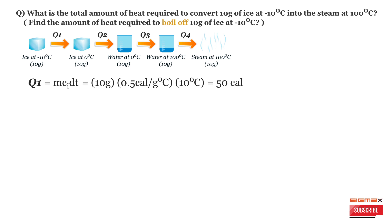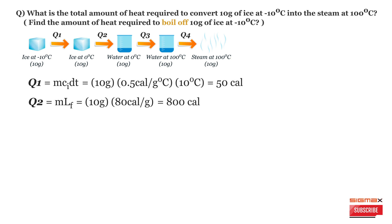Similarly, Q2 represents the state change of ice into water at 0°C, so Q2 = m × L_F. We know that the latent heat of fusion for ice is 80 calories per gram. Therefore, Q2 = 10 grams × 80 calories per gram = 800 calories.